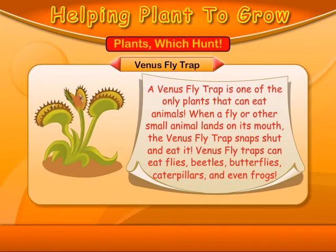Venus fly trap. A Venus fly trap is one of the only plants that can eat animals. When a fly or other small animal lands on its mouth, the Venus fly trap snaps shut and eats it. Venus fly traps can eat flies, beetles, butterflies, caterpillars, and even frogs.